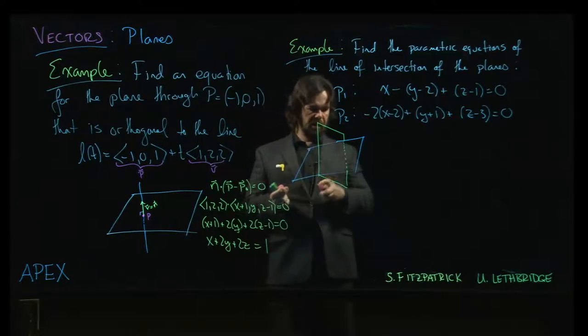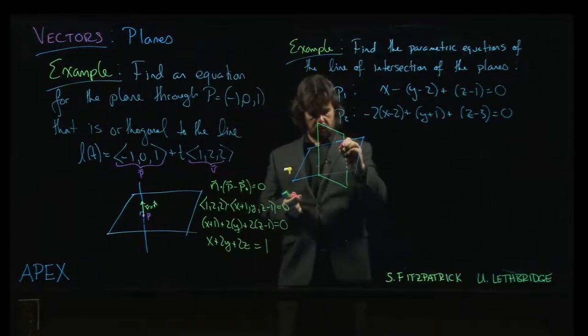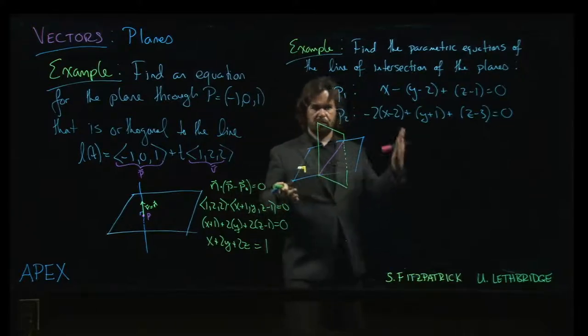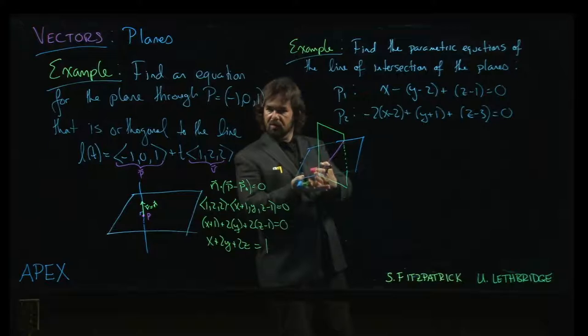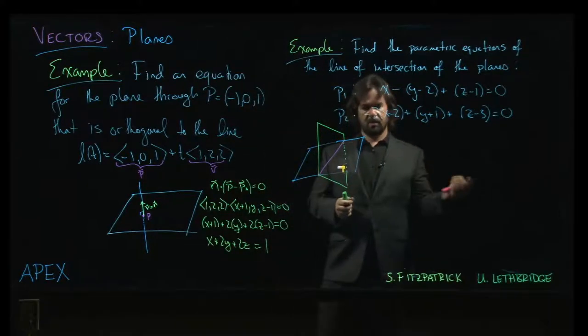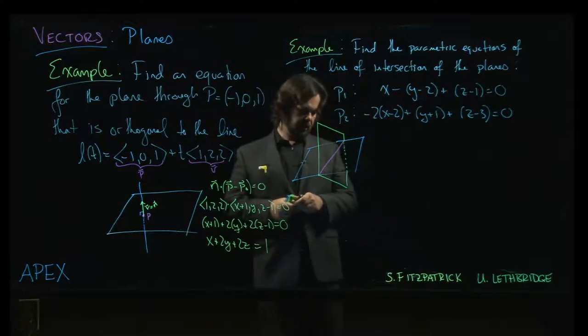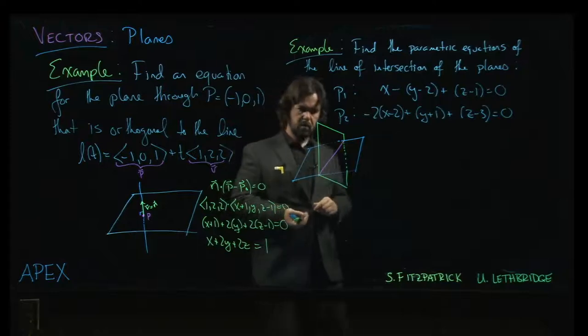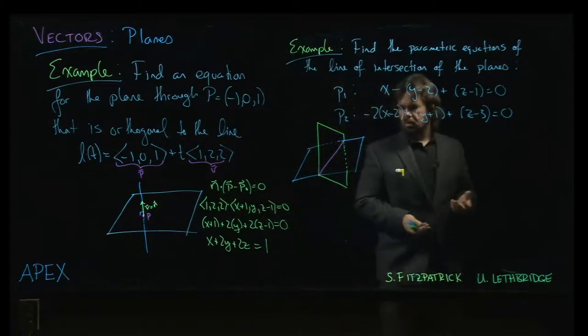And now the intersection, the intersection of two planes, it's going to be a line, right? Think about like putting two boards, lying one board on another, two pieces of paper or something. There's going to be sort of a line where they meet. Something like that.